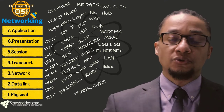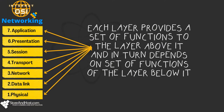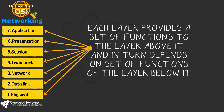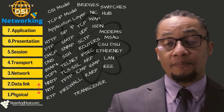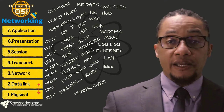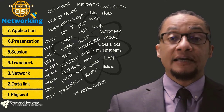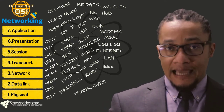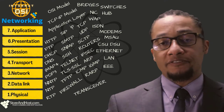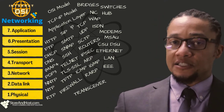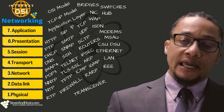Each layer provides a set of functions to the layer above it and depends on the layer below it. For example, on the receiver's end, the data link layer gets bits from the physical layer, converts them into a data frame, and passes it on to the network layer. Each layer also communicates with its peer layer on the other side by sending control messages back and forth — for example, the transport layer of system A sends control messages to the transport layer of system B.